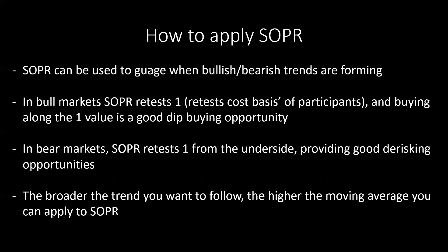So with that being said, SOPR can be used to gauge when bullish or bearish trends are forming. In bull markets, SOPR retests one from the above side, retesting it as support. What that's telling you is that it's retesting the cost basis of market participants, and buying along the one value during bull markets is a good dip buying opportunity. In bear markets, SOPR retesting one from the underside provides good opportunities to de-risk. This is deeply embedded in human market psychology — in a raging bull market, people really don't want to sell at a loss, and so whenever we retest their cost basis, they tend to stop selling, which allows the market to get that breath to continue pushing higher.